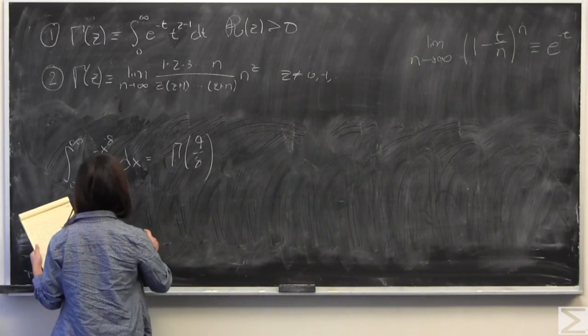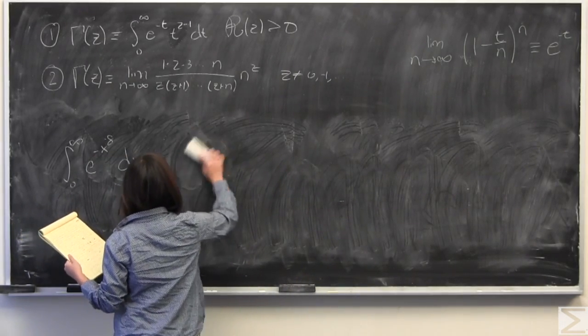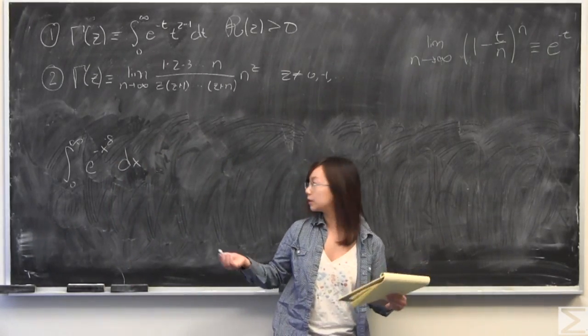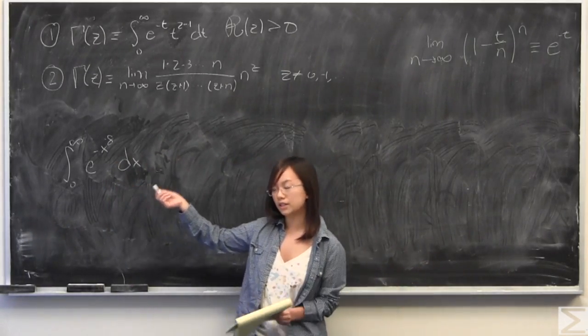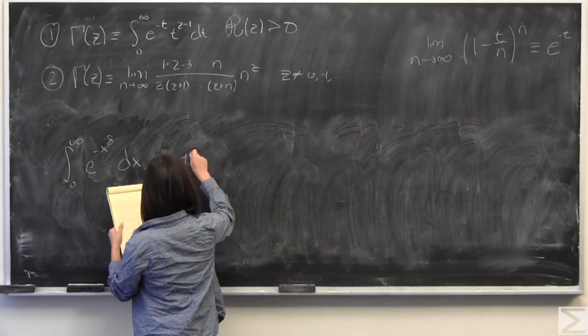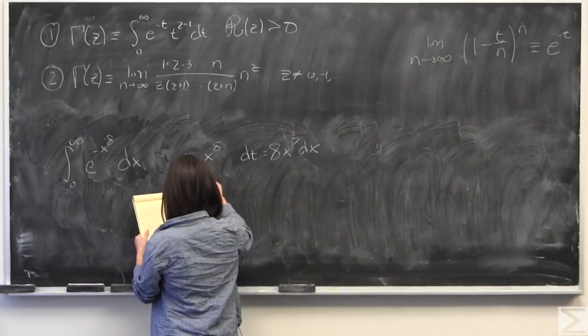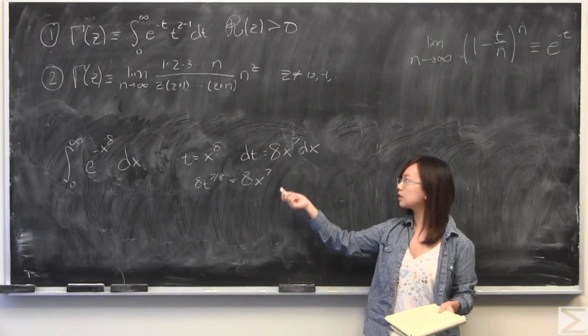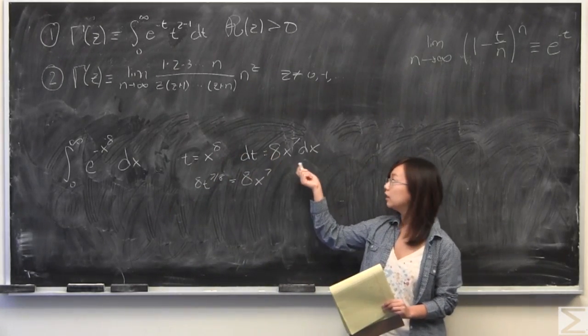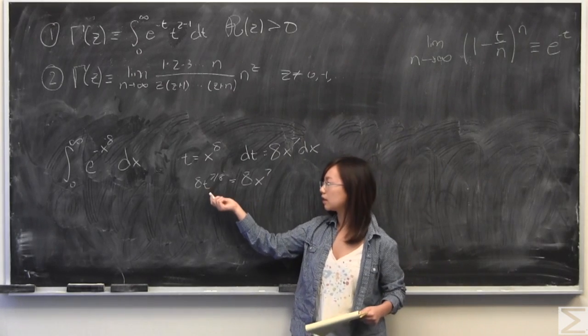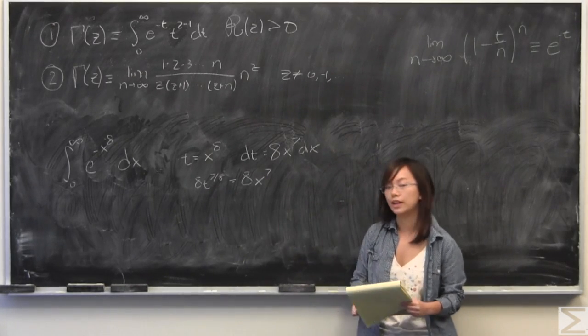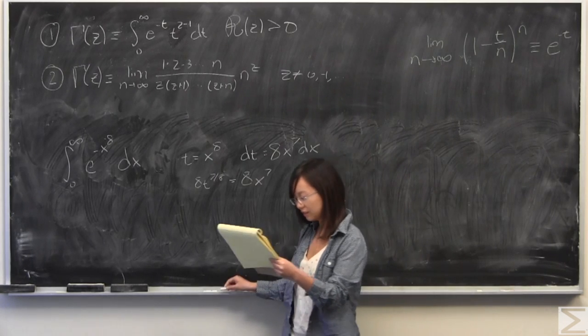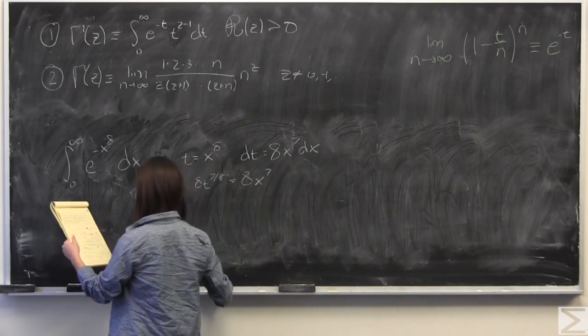I'm going to do a substitution. T is going to be equal to x to the power of 8. I'm going to realize that dt is equal to 8x to the power of 7 dx. However, 8 times t to the power of 7 eighths is also equal to 8x to the power of 7. And that's what we need for this part. I'm going to substitute that back in.